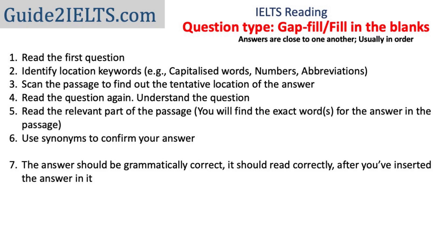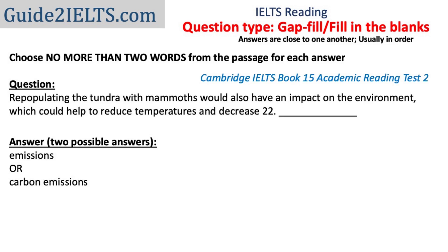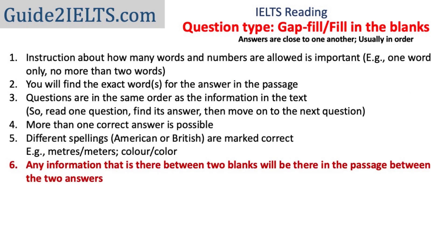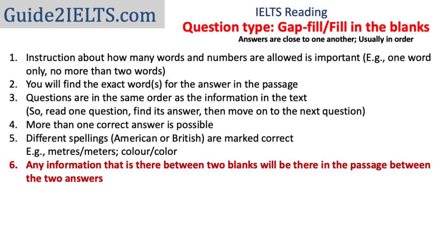Simple words such as 'a' and 'some' can help ensure you have the correct answer — for example, you cannot have a plural word after 'a' or 'an.' There could be more than one correct answer; for instance, both 'emissions' and 'carbon emissions' would be marked correct, but 'carbon' alone would be incorrect. In gap fill questions, any information between two blanks will appear in the passage between those two answers. For example, between the first and second answer in the passage, you will find a mention of horse-drawn vehicles and Charles Pearson — keeping this in mind can help save time.